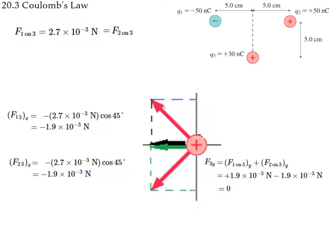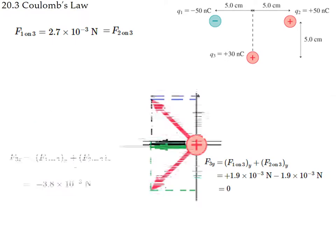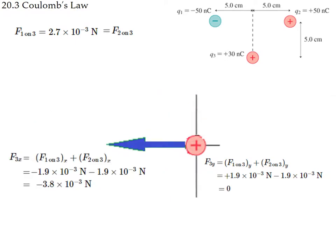Adding the x-components: net force = –2 × 2.7 × cos(45°) in the x-direction, with the vertical component equal to zero. The negative sign indicates the force points to the left. That is the final answer.